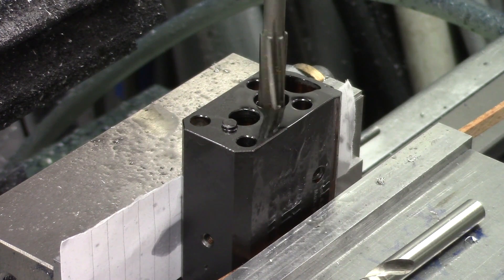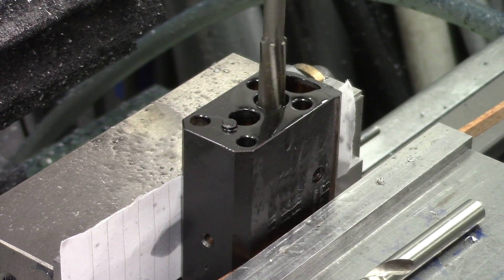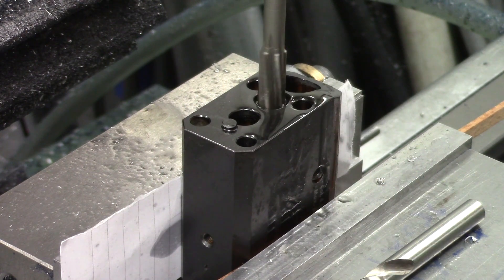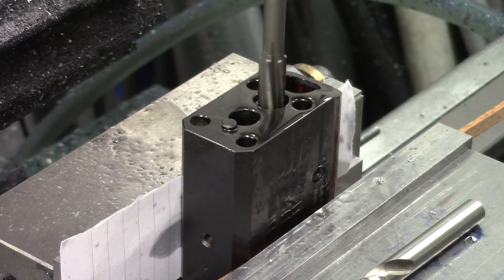The second drill was a 9.4mm drill so taking off a little less material but stepping closer to the final size which we'll do with the reamer.